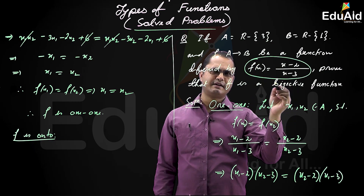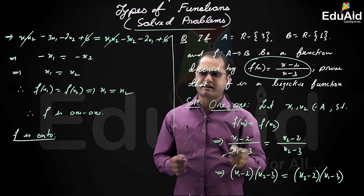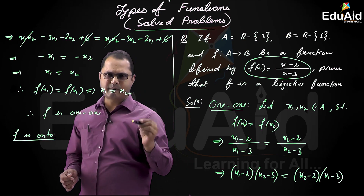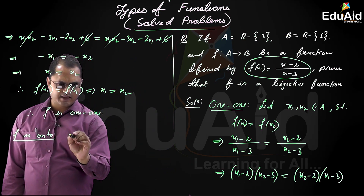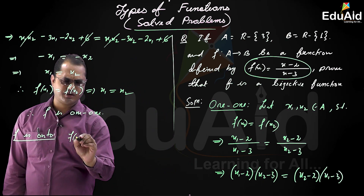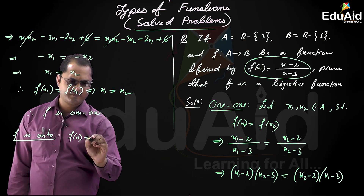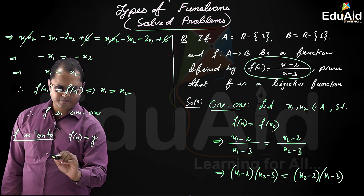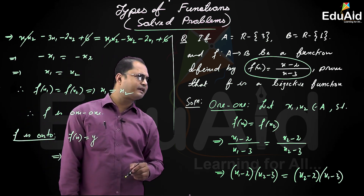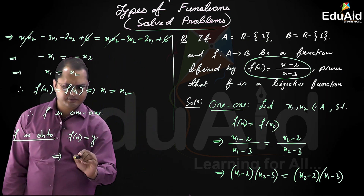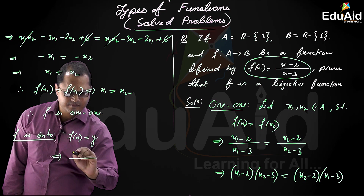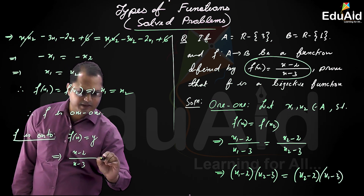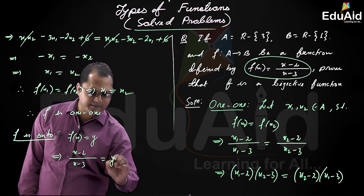Now to show f is onto, we show that for any element y in B, there exists some x such that f(x) equals y. We first assume f(x) equals y. Since the function is defined as f(x) equals (x minus 2) divided by (x minus 3), we set (x minus 2) divided by (x minus 3) equal to y.